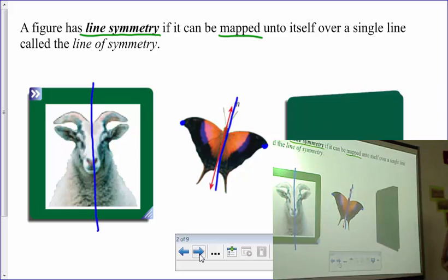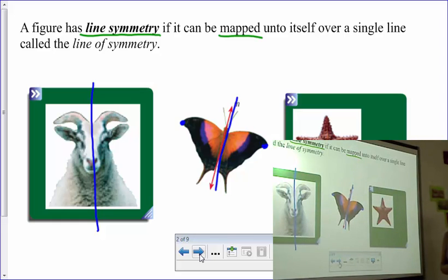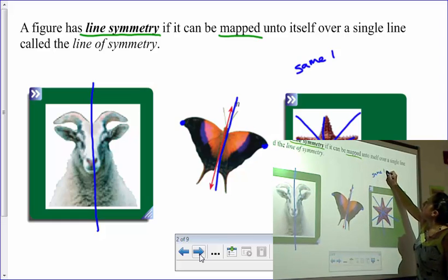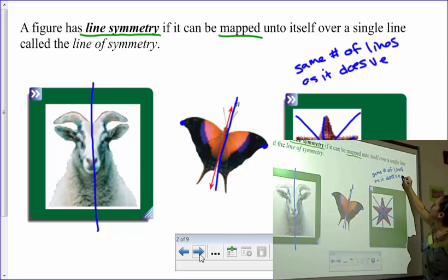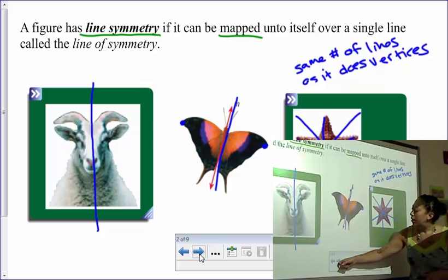Try this one. How many lines of symmetry do you think this has? Think about it. Did you get five? We've got one that goes from each point through its opposite side. For any polygon like this, it has the same number of lines of symmetry as it does vertices. So since this was a five-pointed star, it has five lines of symmetry.